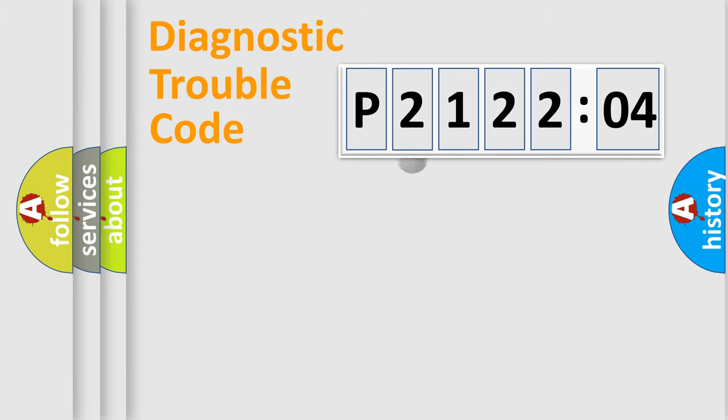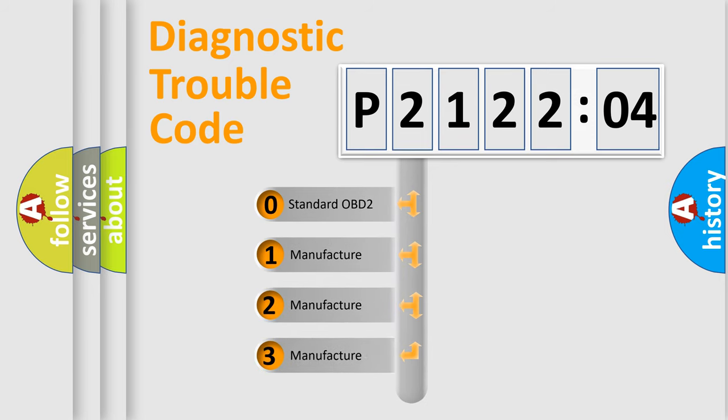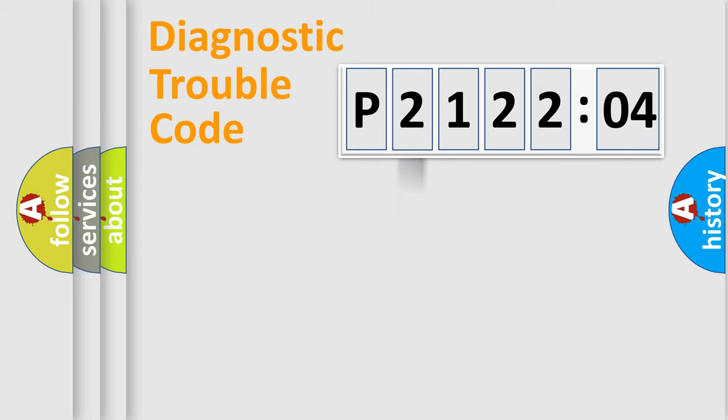The third character specifies a subset of errors. The distribution shown is valid only for the standardized DTC code. Only the last two characters define the specific fault of the group.